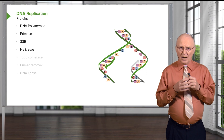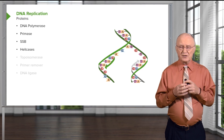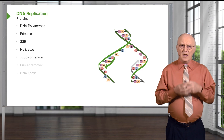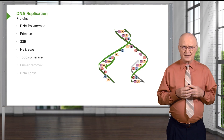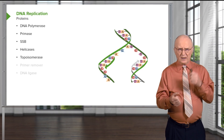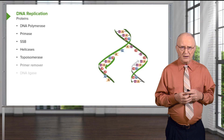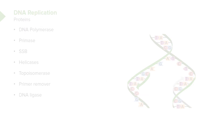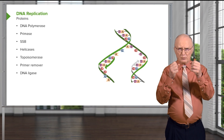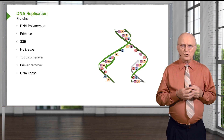Enzymes called helicases help the process to advance at an incredible rate. An enzyme called topoisomerase helps with traffic jams that happen during the replication process — these traffic jams can literally be knots in the DNA if not taken care of. A primer remover is necessary because the primer start is not DNA. And finally, DNA ligase joins all the individual pieces of DNA together during replication.